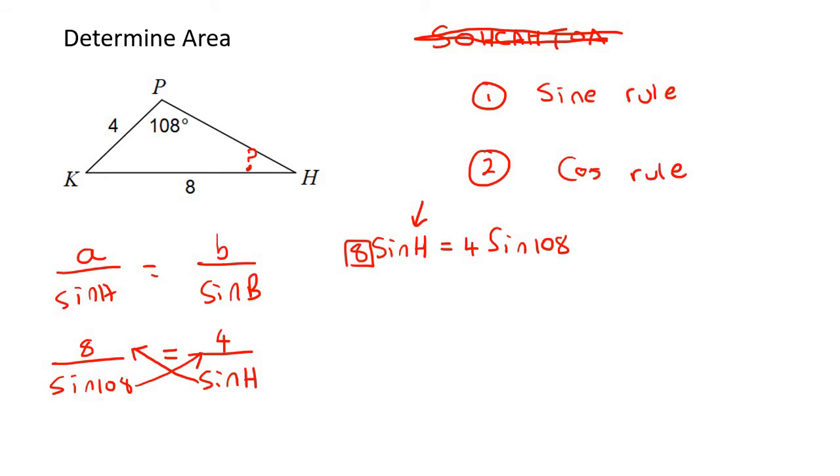Now the goal is to eventually get H by itself. So what I would do next is I would divide by 8. So you'd end up with sin H equals to 4 sin 108 over 8. And then go type it in the calculator and sin H would then be equal to. Now don't round off because that's not our final answer. So 0.4755282581.